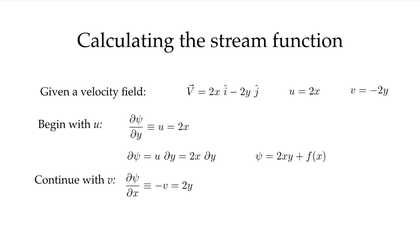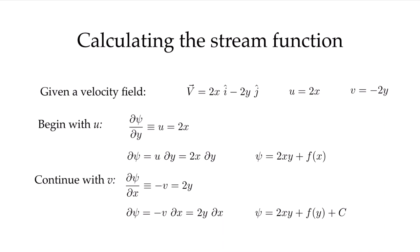Now let's continue with v. The definition says that the derivative of psi with respect to x equals the negative of the v component of velocity, where the negative of v is 2y. Again we can rearrange and integrate. We have the v component integrated with respect to x, whose normal is in the same direction as v — so again we're talking about a volume flow rate through a surface. Integrating 2y with respect to x gives 2xy, plus an arbitrary function of y, plus a constant.